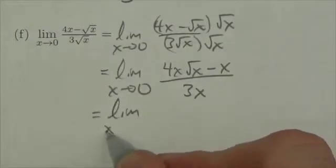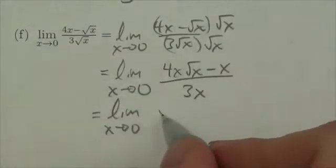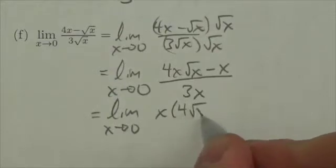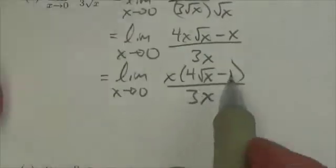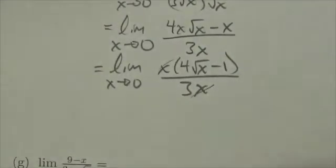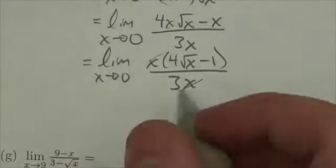Okay so this is now going to be the limit as x approaches zero. I can factor an x out of the numerator. Okay and so now the x is here and the numerator and denominator will cancel. So x divided by x is 1.